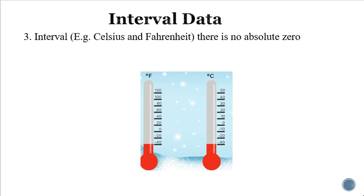Coming to the third type of data, that is called interval data. Interval data is the type of data that doesn't have an absolute zero. It may vary from a minus value to a plus value. For example, temperature — minus 40 degree Celsius is very cool and plus 40 degree Celsius is very hot. The value may go from minus to plus, so that is called interval data.